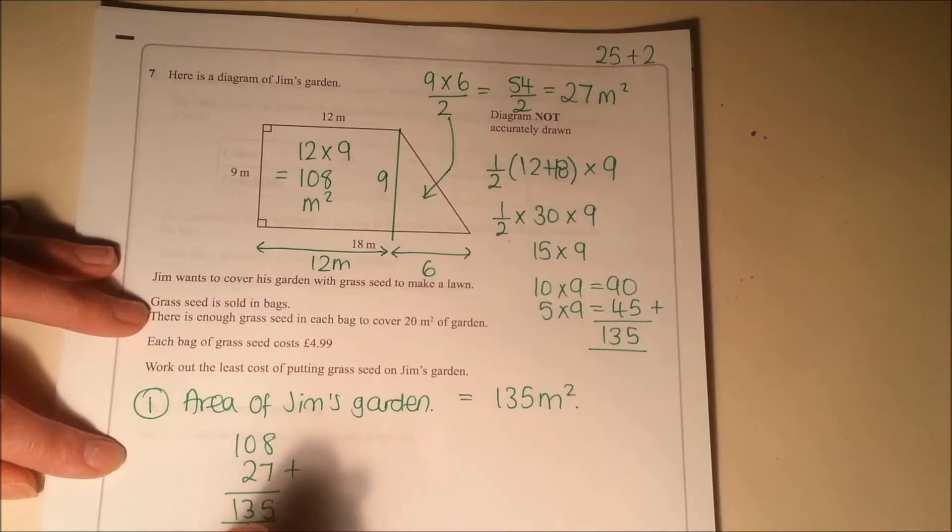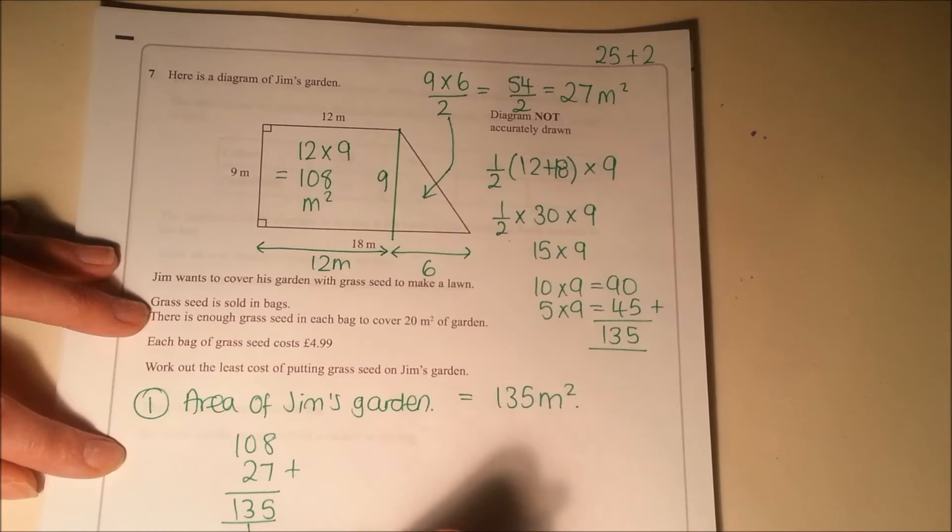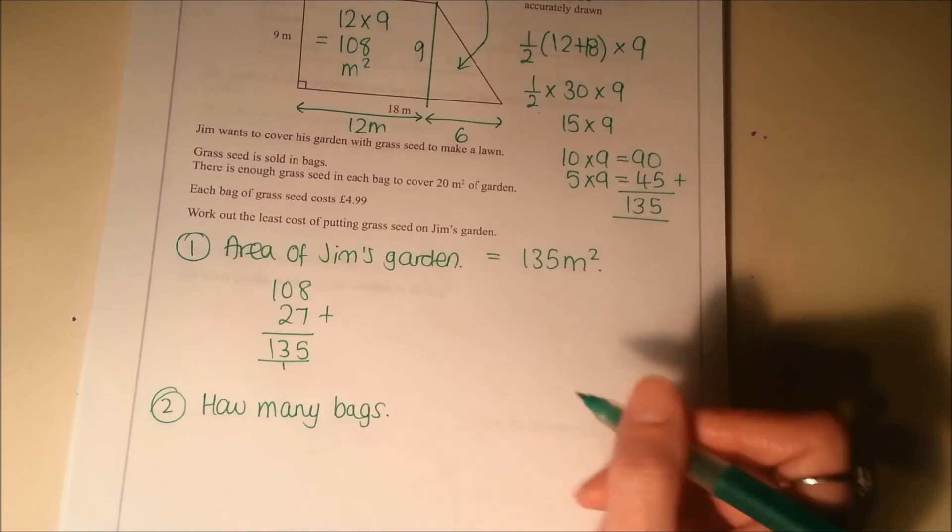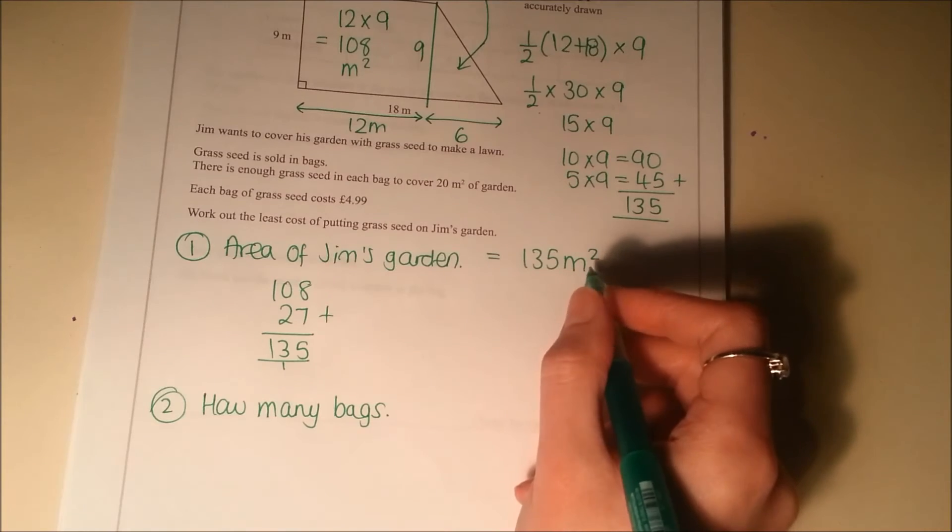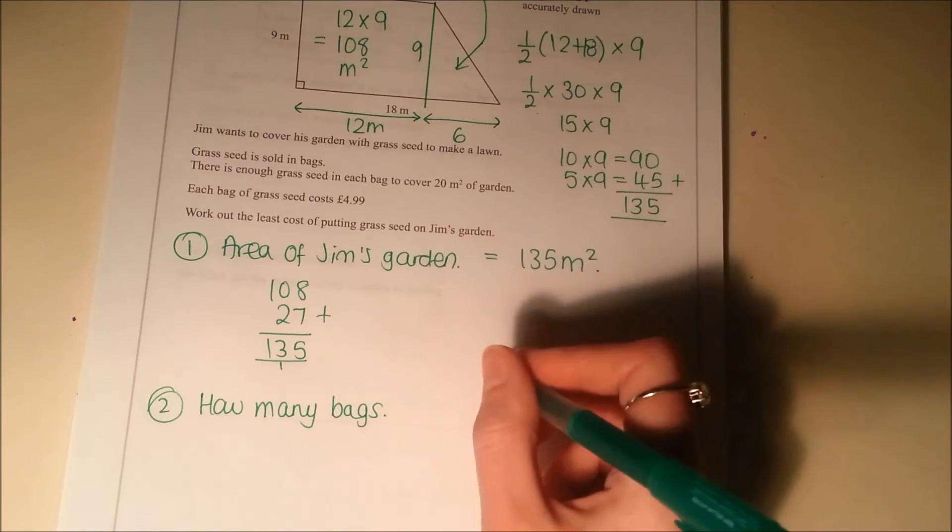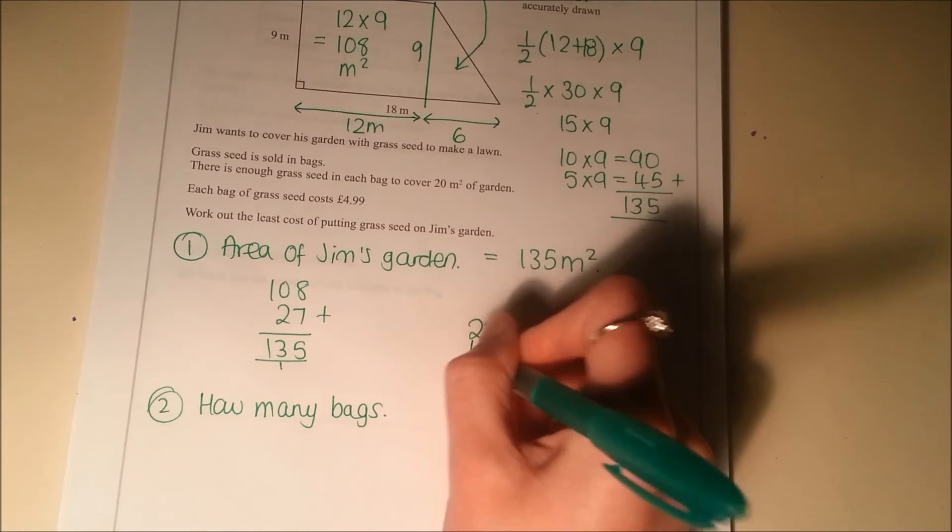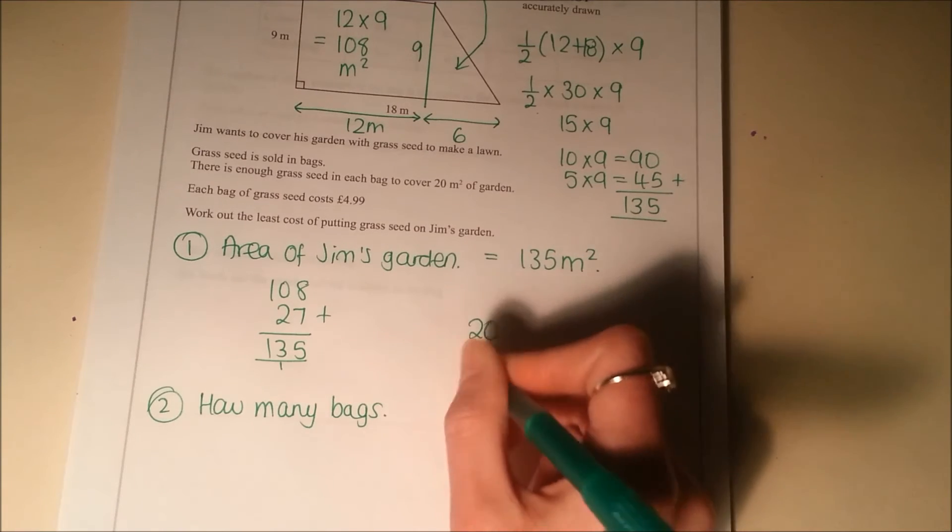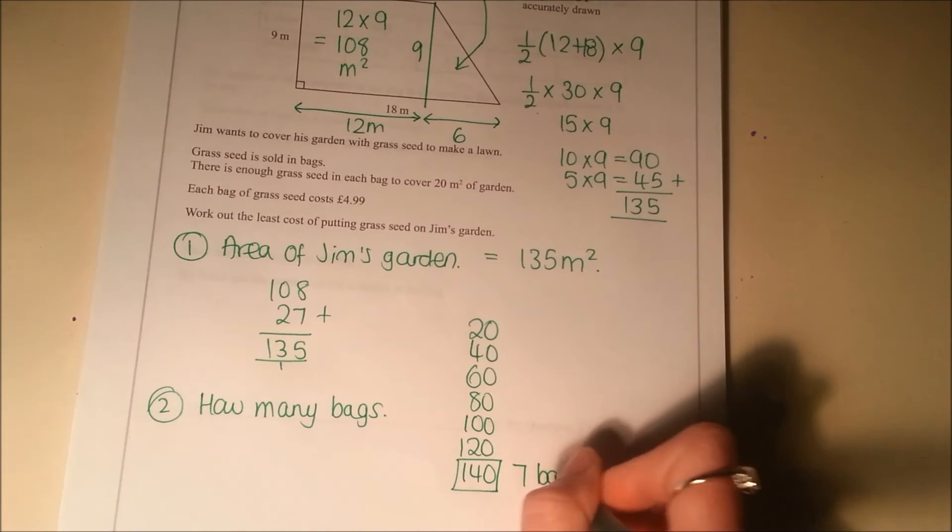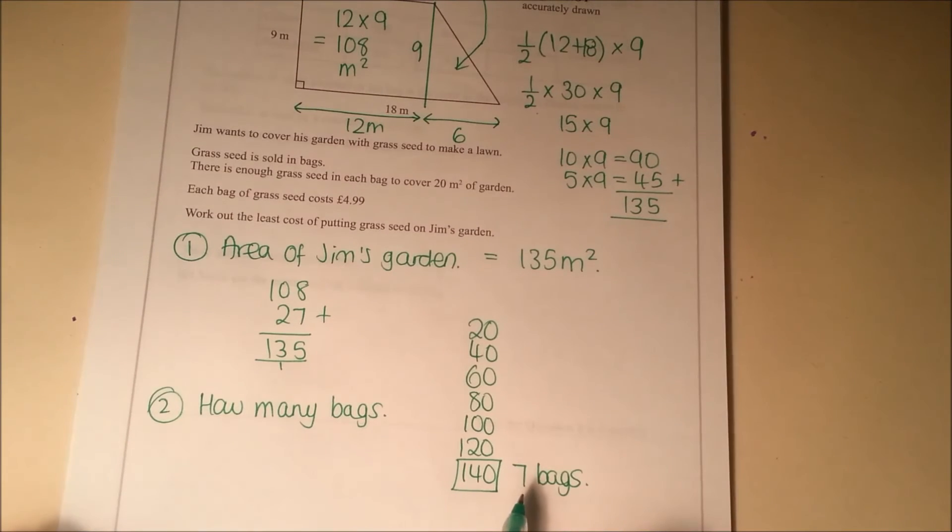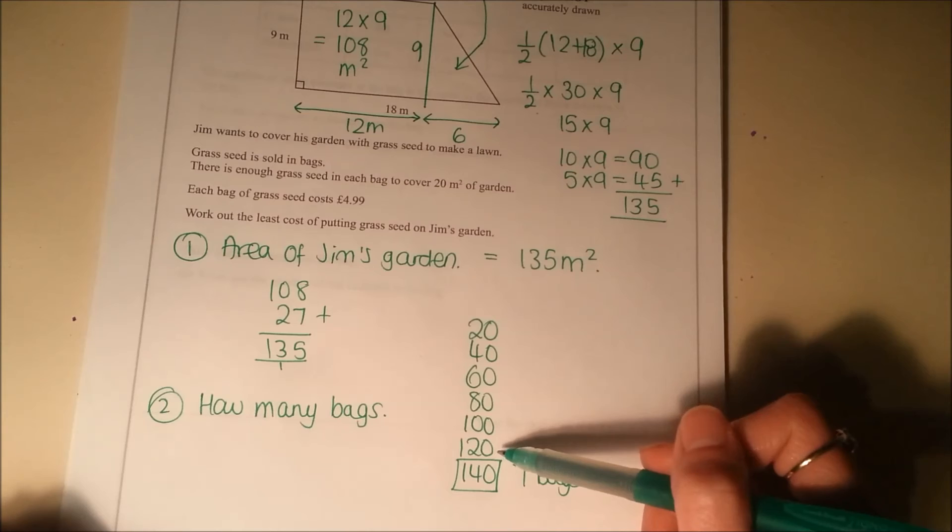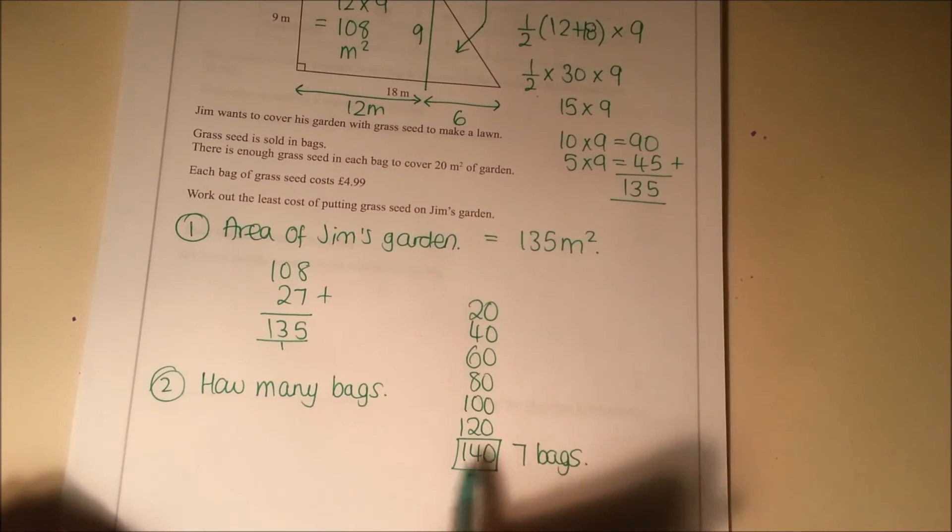Next step, we need to work out how many bags. He needs to have enough to cover 135 metres. Each bag covers 20 metres of garden. So the easiest way of doing this I think is just to list them. So that's one bag 20, two bags 40, three bags 60, four bags 80, five bags 100, six bags 120, seven bags 140. So he's going to need seven bags to cover the whole garden. We can't use six bags because if he buys six bags, 120, he's going to have 15 metres left over he can't cover. So he's going to need seven bags.